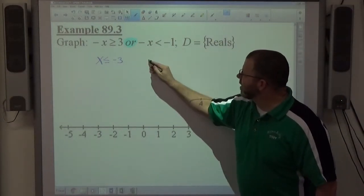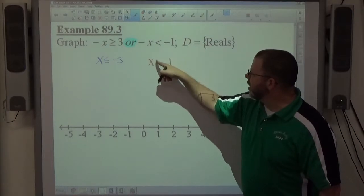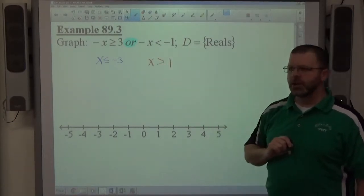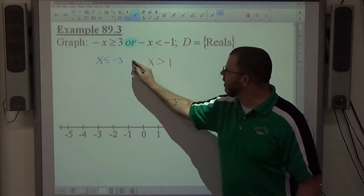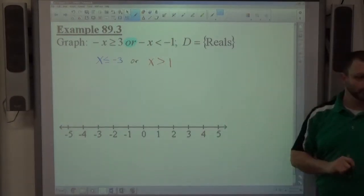Negative x is less than negative 1, that's x greater than positive 1. And again we change the signs so the inequality switches direction. And that fancy word in between, 'or', is still in between.